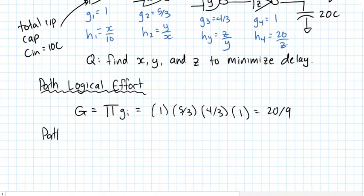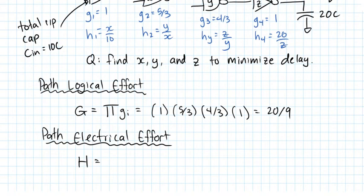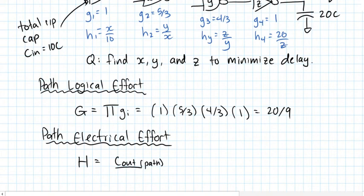Similarly, the path electrical effort, uppercase H, is the ratio of the output capacitance of the path to the input capacitance. This is because electrical effort is defined as the ratio of external load capacitance to input capacitance of the driving gate. For our path, H = 20/10 = 2.